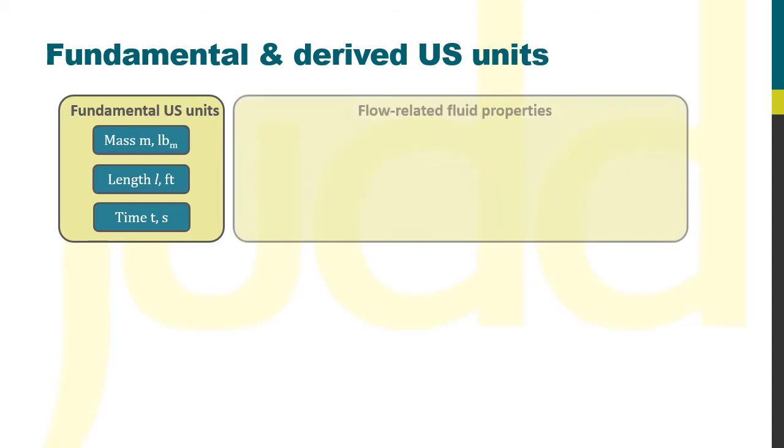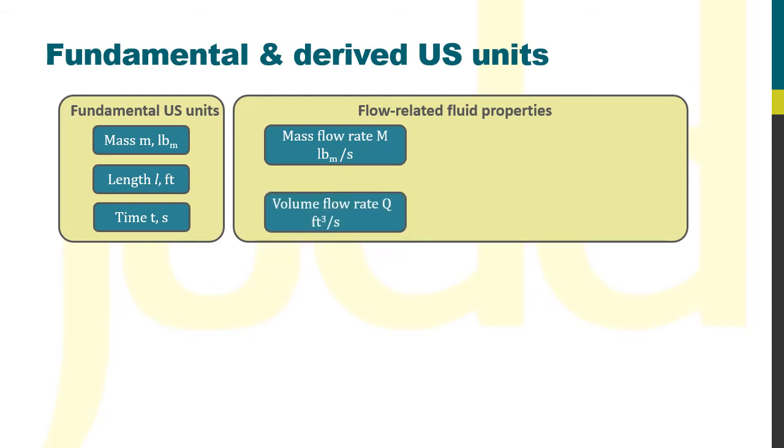Now, this being the case for the fluid properties, mass flow would take units of pounds per second, volume flow units of cubic feet per second, fluid density pounds per cubic feet, and viscosity pounds per foot per second. The first thing to note is that subscript M for pounds. That's because there are two different sorts of pounds in the US system, which we'll come to later.